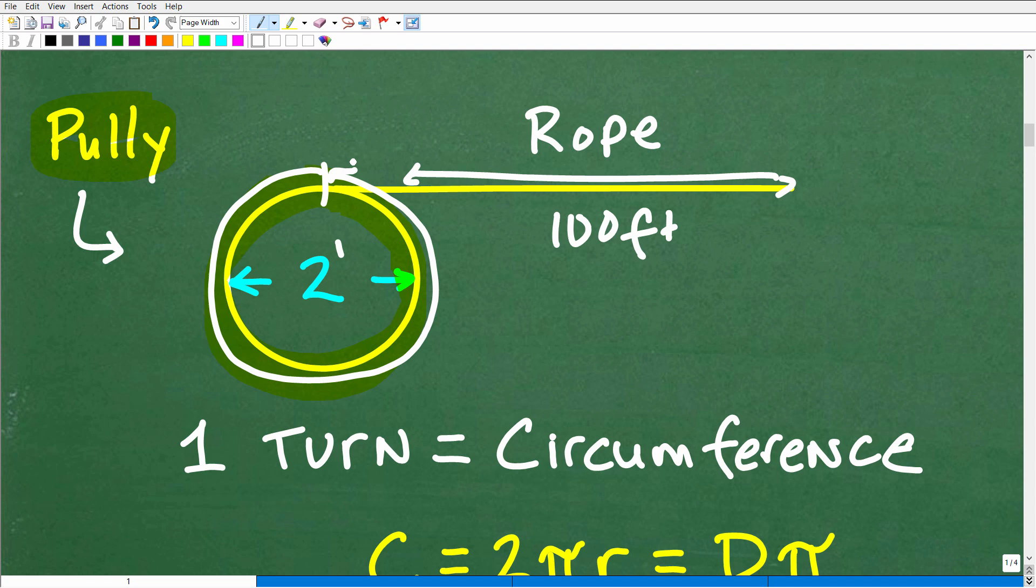But what is one turn conceptually in terms of a circle? Well, one turn, that distance traveled is the circumference. Okay? So if we turn this circle, this circular pulley one time around, i.e. 360 degrees, we did one lap. That is covering one circumference of the circle. Okay? So what is the circumference?